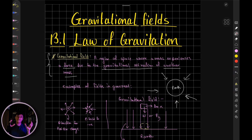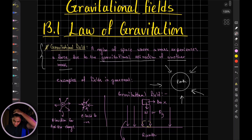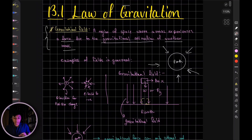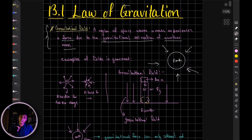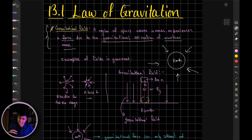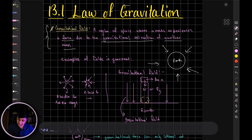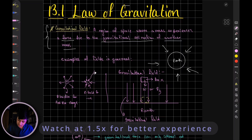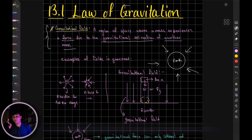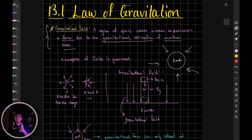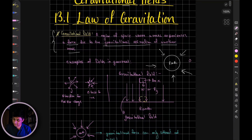Gravitational field is not the only example of a field — we also have electric fields. If you study that topic, you'll see that for positive charges the field lines point outwards, and for negative charges the fields are inwards, that is, attractive. However, in the case of gravitational field, the field lines are always attractive — always pointing towards the center of the object. So if you leave an object, depending on the field line, it will move towards the surface of the Earth.